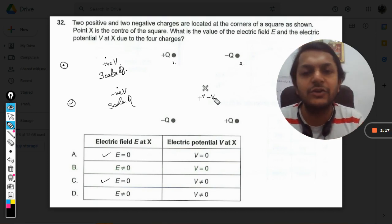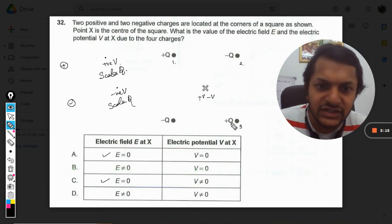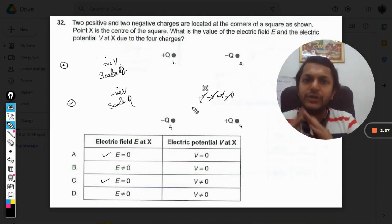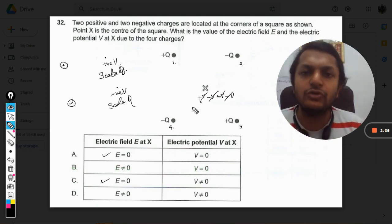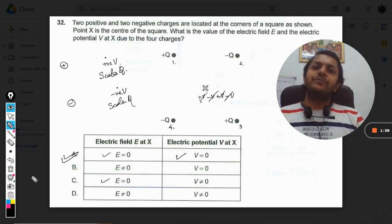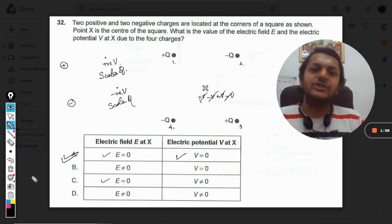Now because of this third charge, there will be plus V. And again, because of this minus Q, there will be minus V. And in total, the potential will also come out to be equal to zero. So our answer will be A. In this case, the answer is A.